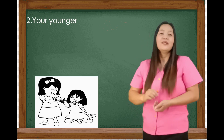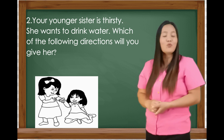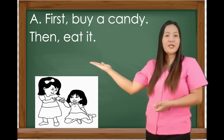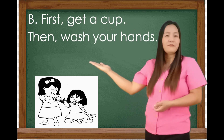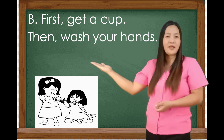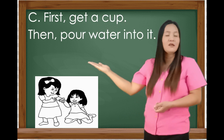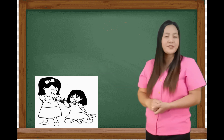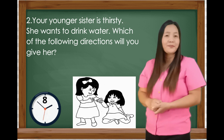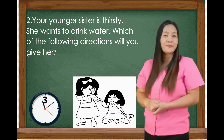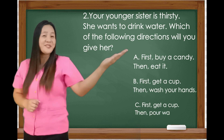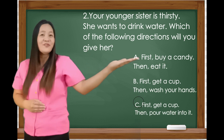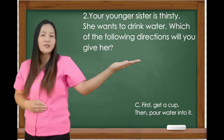Number 2. Your younger sister is thirsty and wants to drink water. Which of the following directions will you give her? Letter A: First, buy a candy. Then, eat the candy. Letter B: First, get a cup. Then, wash your hands. Letter C: First, get a cup. Then, pour water into it. The correct answer is Letter C — first, get a cup. Then, pour water into it.